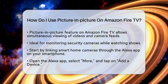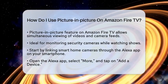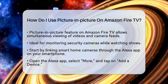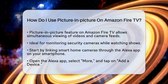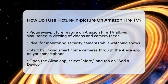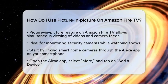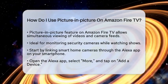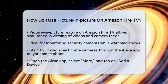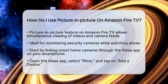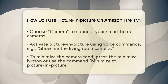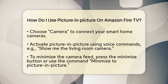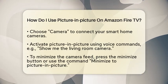First, to use picture-in-picture with smart home cameras, you need to link them through the Alexa application. Start by opening the application on your smartphone. Select the option labeled More, then tap on Add a device. From there, choose Camera to connect your smart home cameras. This step is essential for enabling the picture-in-picture feature.